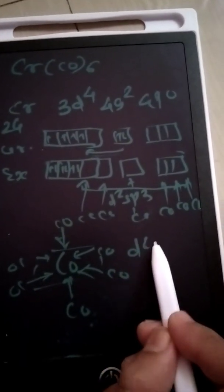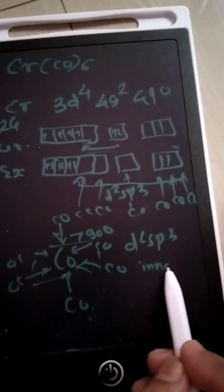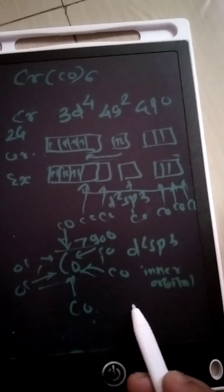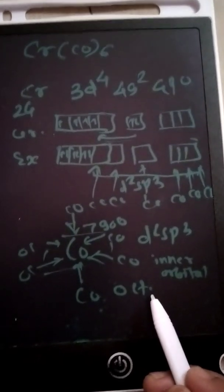So it is the hybridization d2sp3. All the bond angles are 90 degrees. It is an inner orbital complex, inner orbital d orbital complex, and it has octahedral geometry, perfect octahedral geometry in this way.